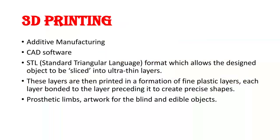After modeling the component, you have to convert that file into STL format. In additive manufacturing we are building the component by adding material layer by layer, and the STL format allows the design object to be sliced into ultra-thin layers. After slicing, you transfer that file to the 3D printer, which deposits the material according to the layers — that is additive manufacturing.